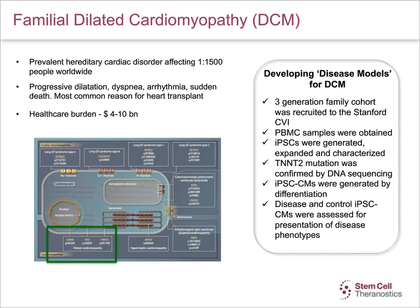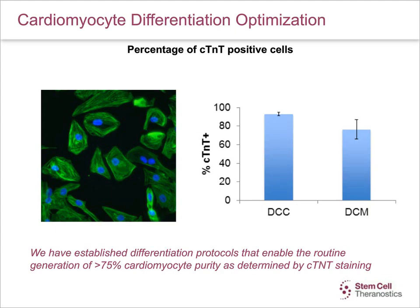This slide shows optimization of the cardiomyocyte differentiation process in the DCM model. The left panel shows that cells stain positive for CTNT. In the right panel, you can see a graph showing quantitation of CTNT-positive cells in both control and DCM cardiomyocytes.